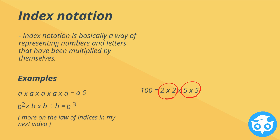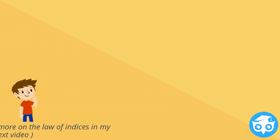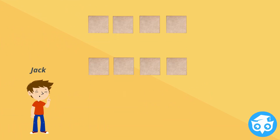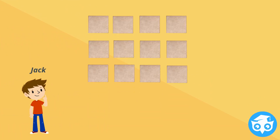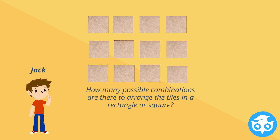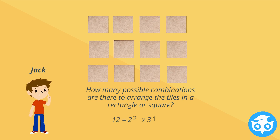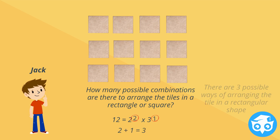Now that we know index notation, we can write the prime factorization using it. Jack now knows that 12 is equal to 2 squared times 3. So 1 plus 2 equals 3. Thus, there are 3 possible ways of arranging the tiles in a rectangular shape.